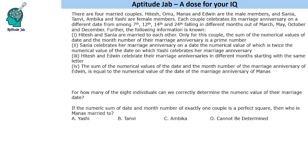Some information is given: Hitesh and Sanya are married to each other. Only for this couple, the sum of the numerical values of the date and month number of their marriage anniversary is a prime number. You should know that March is the third month, May is the fifth, October is the tenth, and December is the twelfth month. Basically, it has to be even plus odd — if the date is odd, the month would be even and vice versa — because two is the only even prime number. We will come to it later.